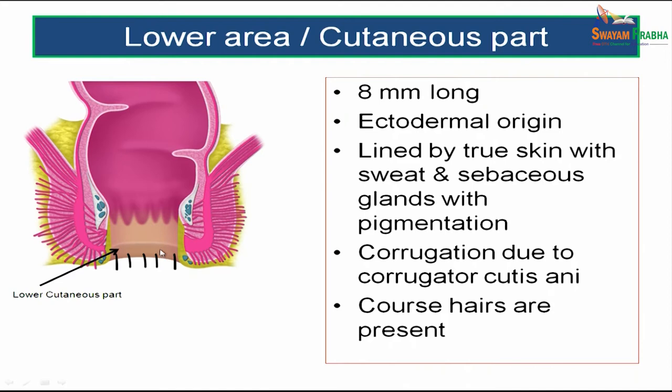The lower cutaneous part is only 8 millimeters long and is ectodermal in origin. It is lined by true skin with sweat glands, sebaceous glands, and pigmentation. Some corrugation is also seen because of the corrugator cutis ani. Coarse hairs are also present in the cutaneous part.